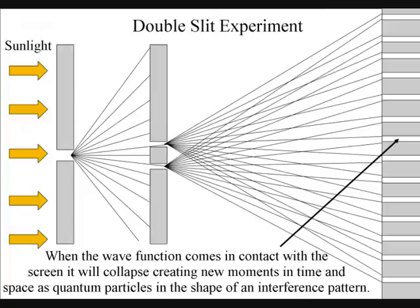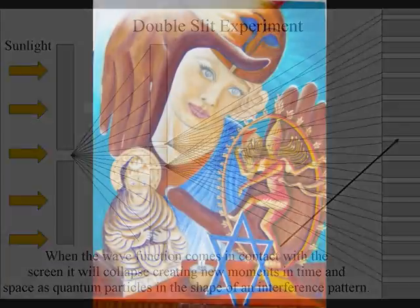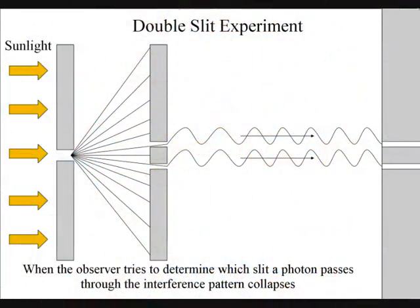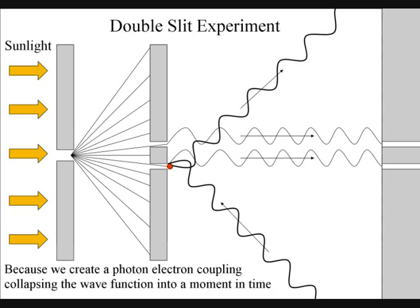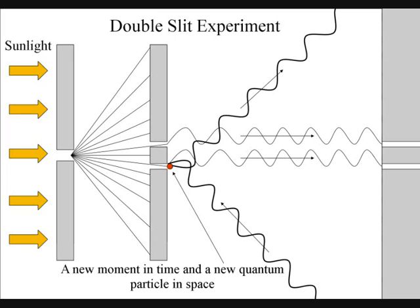When the observer tries to determine which slit a photon passes through, the interference pattern collapses. This is because to observe the photon, we have to create a photon-electron coupling, collapsing the wave-function and creating a new moment in time and a new quantum particle in space.